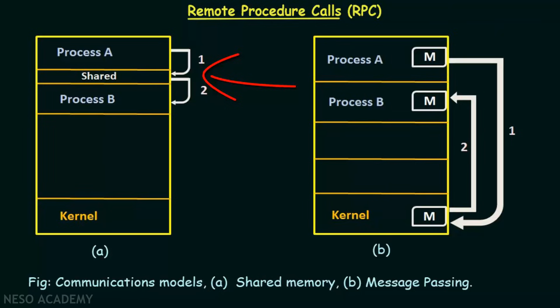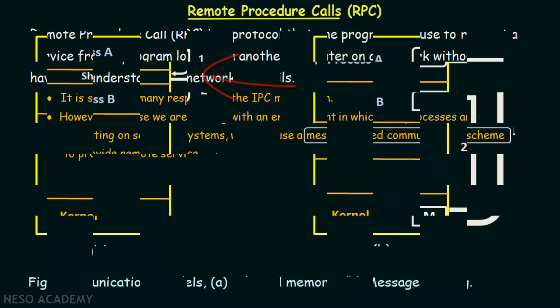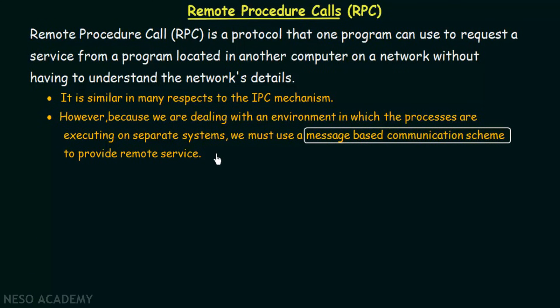In a shared memory system, processes communicate by writing to and reading from a shared memory region. But in RPC, we are dealing with processes residing in two different systems connected via a network, so it may not be possible to have a shared region of memory. Therefore, we must use the message passing communication scheme in RPC.